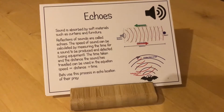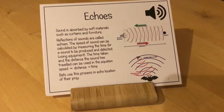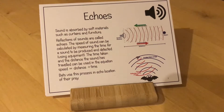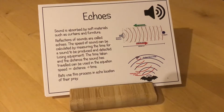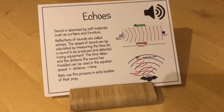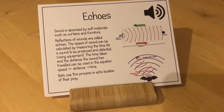The speed of sound can be calculated by measuring the time for a sound to be produced and detected using equipment. If you know the distance between yourself and the wall the sound is reflecting off, you double it because it has to come back again. You can then measure the time taken and use the equation speed equals distance divided by time to work out the speed of sound.